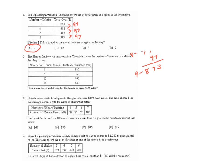Question two says the Hanson family went on vacation. The table shows the number of hours and the distance that they drove. We have a table that shows eight hours all the way up to 11 in the distances. How many hours will it take for the family to drive 520 miles? This is very similar to the previous one. Looks like each hour they're going 40 miles.